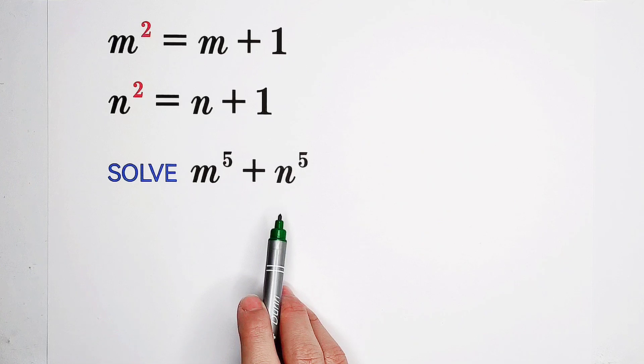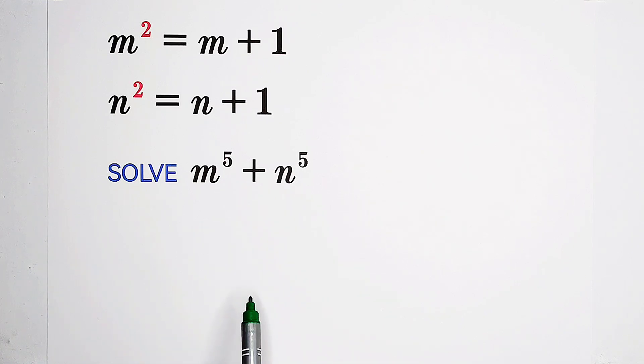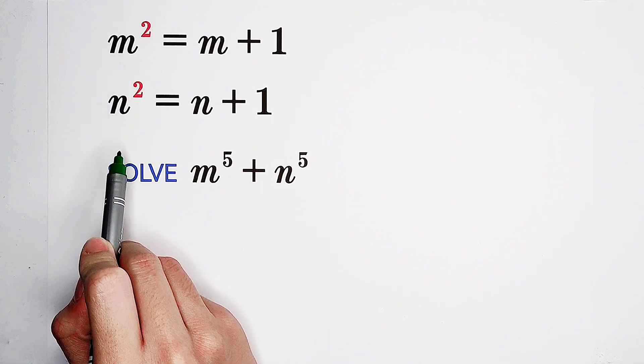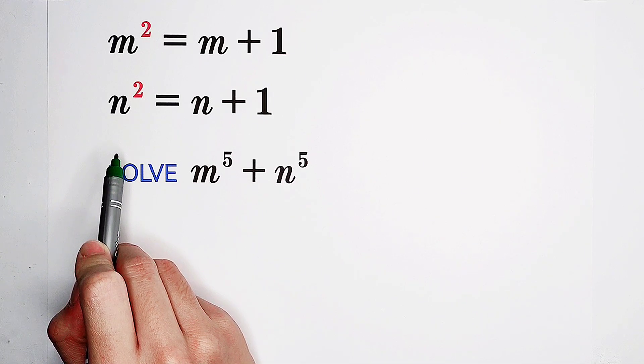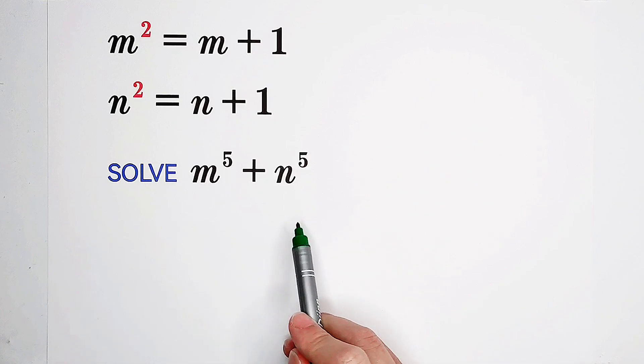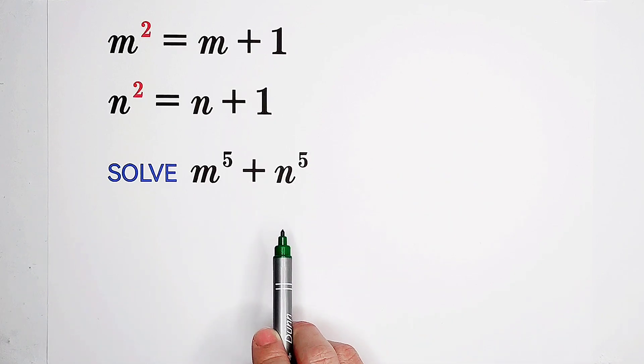How to solve this problem? Maybe you're going to say, I have an idea. Look, two equations about m and n. Firstly, solve the values of m and n, then substitute into this term. Of course, that's an idea, however, not a good idea.